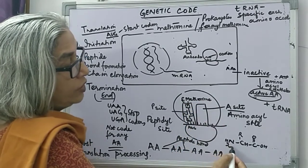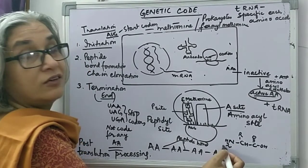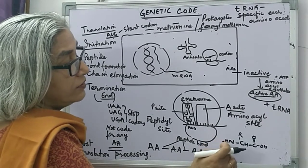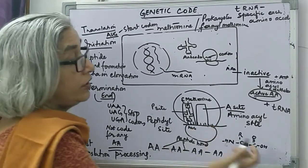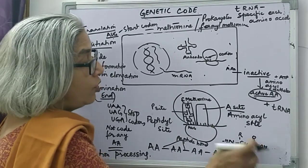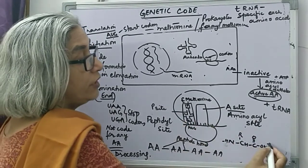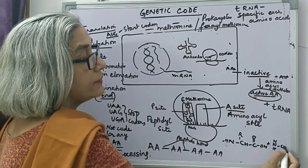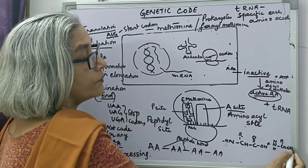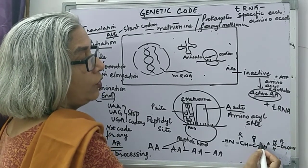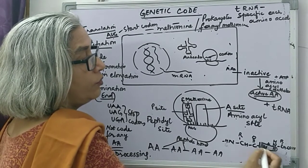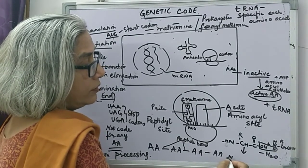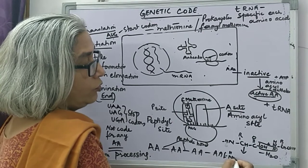Why formylmethionine? So that this amino group is blocked — the formyl group is present and blocks the amino group. The reaction will be between the carboxylic group of the first amino acid and the amino group of the second amino acid. A molecule of water will be removed, and this results in the formation of what is called a peptide bond.